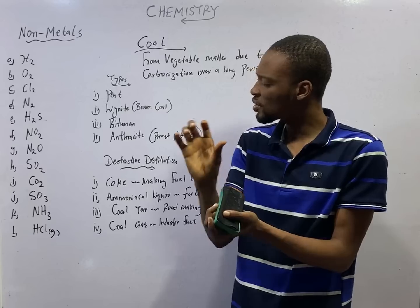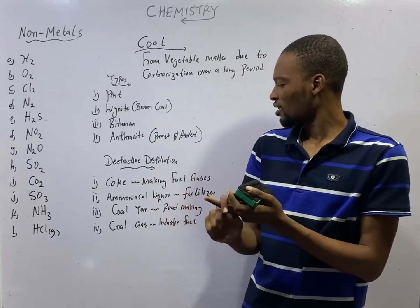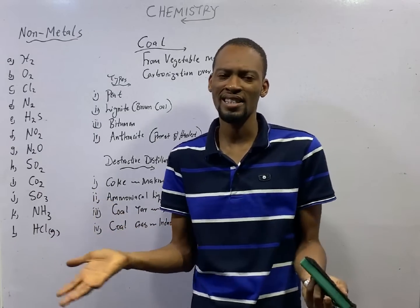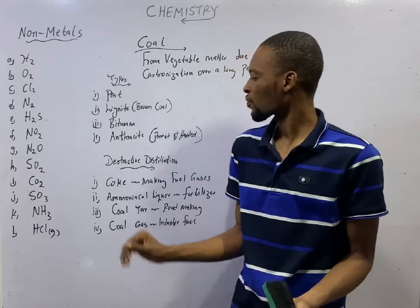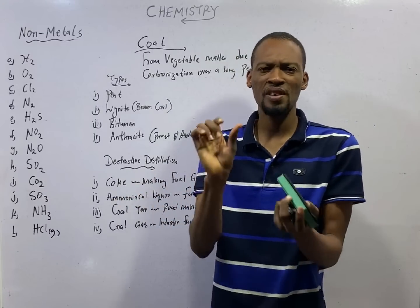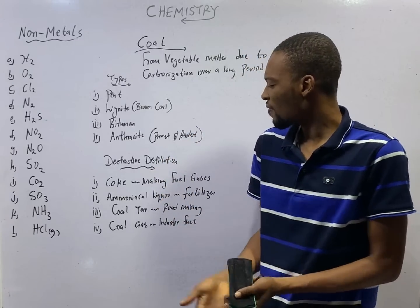Destructive distillation of coal will give you four products, which are: Coke, and Coke is used in making fuel gases like the water gas and synthesis gas. The second product of the destructive distillation of coal is Ammoniacal Liquor.